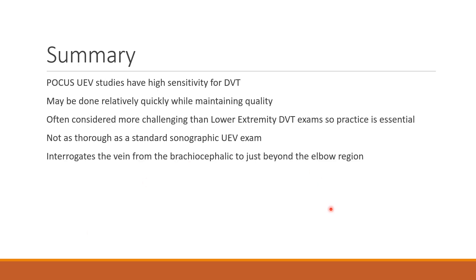In summary, point-of-care ultrasound upper extremity venous studies have high sensitivity for DVT and can be done relatively quickly while maintaining good quality. They are often more challenging than lower extremity DVT exams, so practice is essential. They're not as thorough as a standard sonographic examination, but are a great option for quick diagnosis or ruling out DVT. The exam interrogates veins from the brachiocephalic to just beyond the elbow, with discretion to extend into the ulnar and radial region as needed.